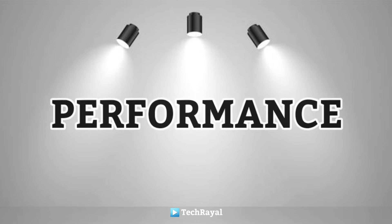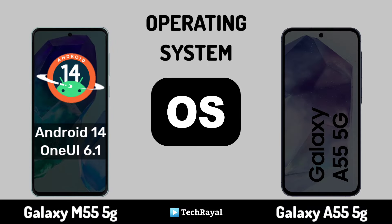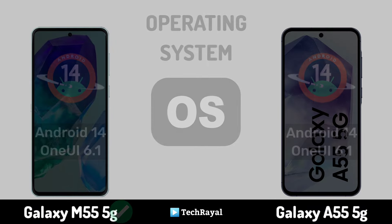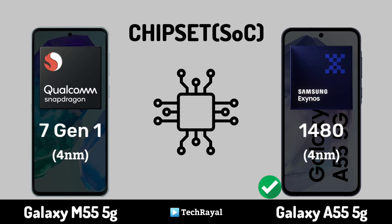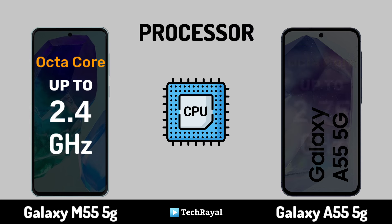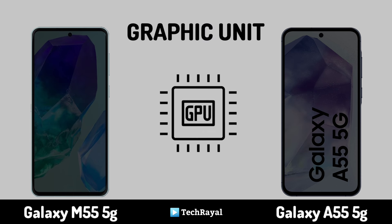Now, Core Performance: Operating System. Chipset. Processor. Graphic Unit.